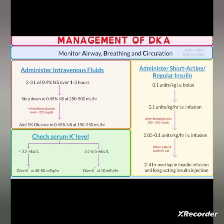Add 5% glucose to half-strength normal saline at 150 to 250 mL per hour. So the sequence is: normal saline first, then half-strength normal saline, then dextrose or 5% glucose in half-strength normal saline, adjusted based on blood glucose levels.